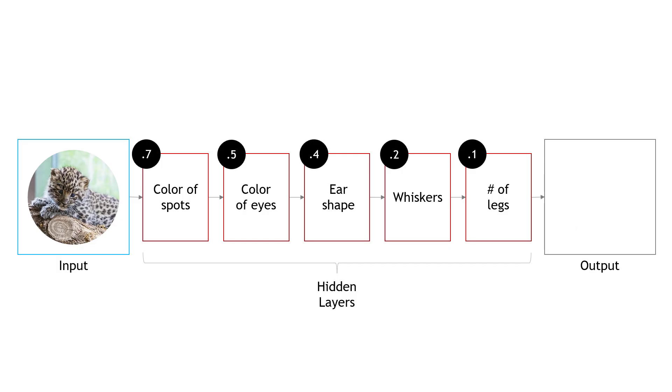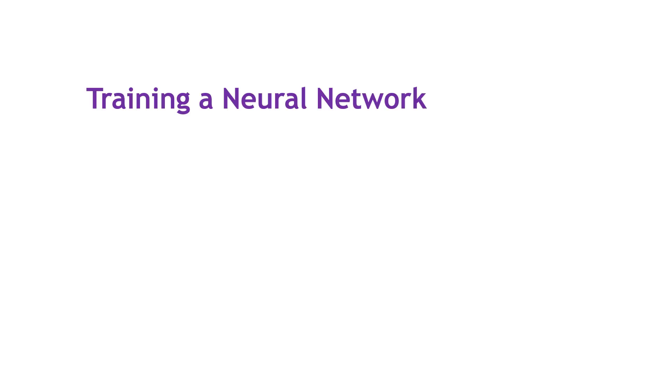But then maybe we pass in another image that looks like this. Our neural network goes through all the same steps, using the same weights, and so on. But this time it says this picture does not look like a leopard. Instead, we think this is a cheetah, which is not correct. So how do we make the neural network smarter, helping it to make accurate predictions more often?